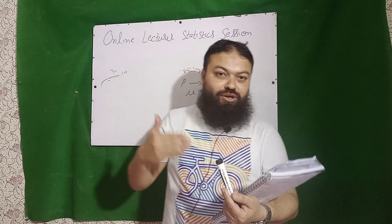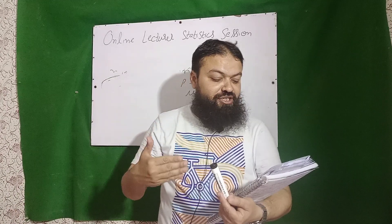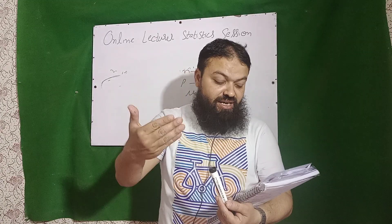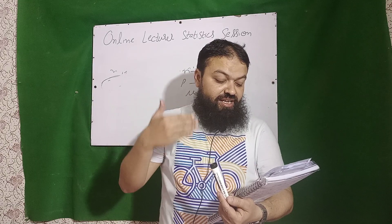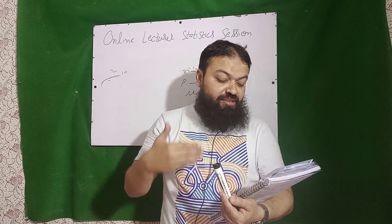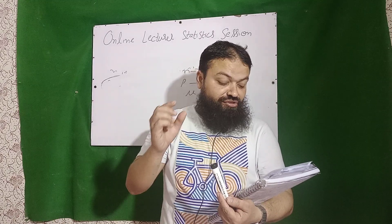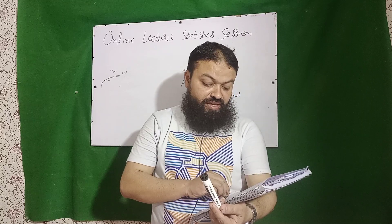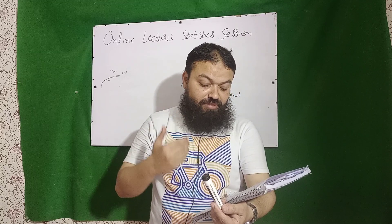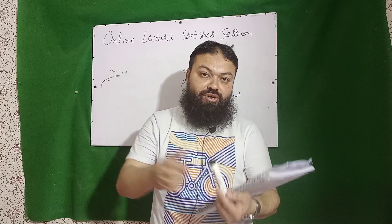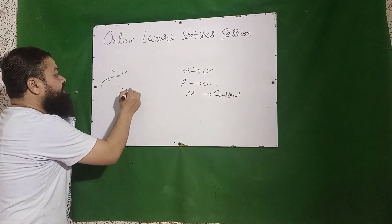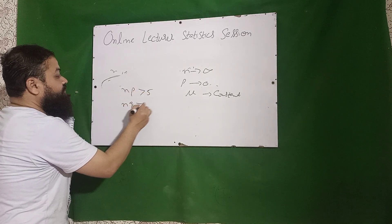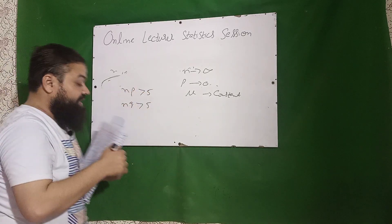Next question: normal approximation to the binomial distribution applies when n is large and P is approximately close to 0.5. The binomial approaches normal when we have nP greater than 5 and nQ also greater than 5.